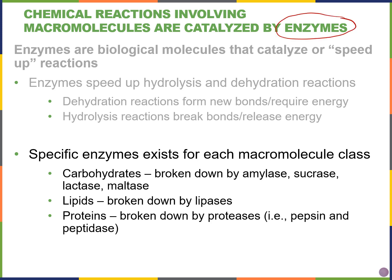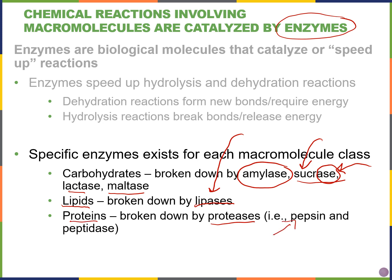Enzymes are very specific as to what they will break down — an enzyme won't just break down anything. We have amylase in our saliva that breaks down carbohydrates. We also have sucrases that break down sucrose, lactases that break down lactose, and maltase that breaks down maltose. Very often, but not always, the name of the enzyme ends with -ase and tells you what it's going to break down. We also have enzymes that break down lipids — a group called lipases — and proteases break down proteins. Examples of proteases include pepsin or peptidase.